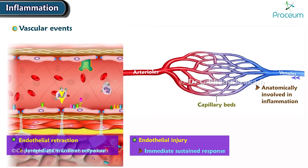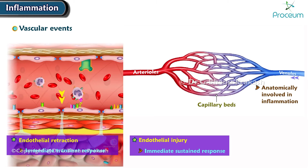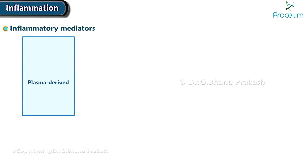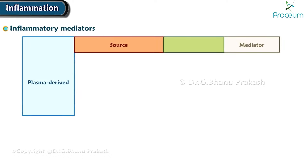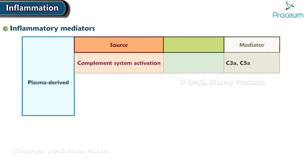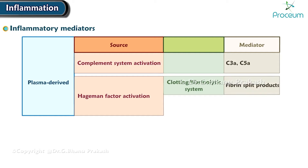This involves the emigration of leukocytes, with accumulation and activation at the site of the injury. This phenomenon also involves plasma-derived inflammatory mediator sources, such as complement system activation giving rise to C3a and C5a mediators, and Hageman factor activating the clotting system, which gives rise to fibrin split products, and the kallikrein-kinin system giving rise to kinins such as bradykinin.